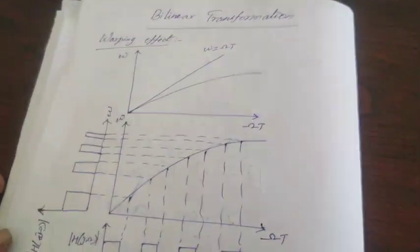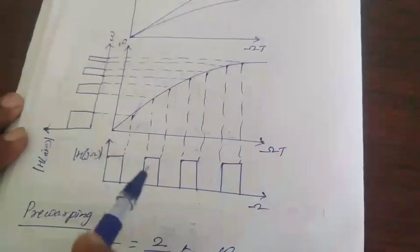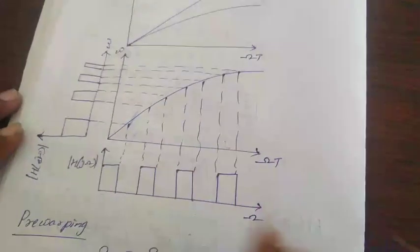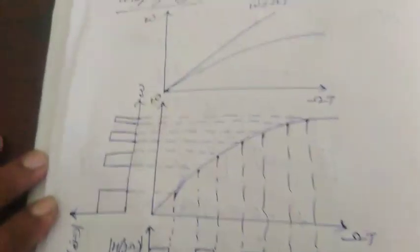In the bilinear transformation, one important thing is pre-warping. Let's see about the warping effect.